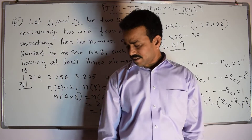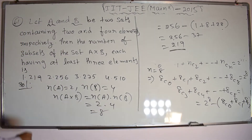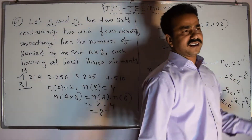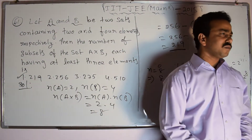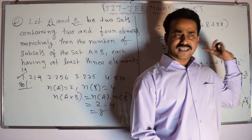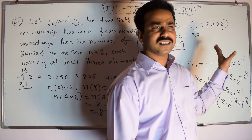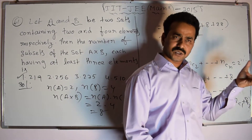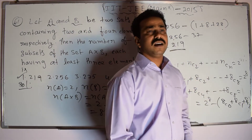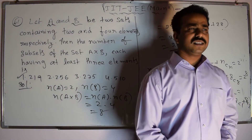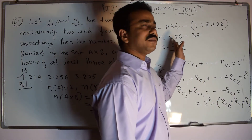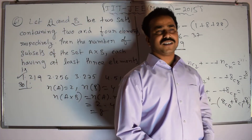The answer is 219. Comparing with available options, 219 is the correct answer. The key concepts used: first, the total number of subsets of a set (2 power N); second, combinations — choosing 3 elements from 8 using NCR; and third, the binomial coefficient formula NC0 + NC1 + ... + NCN = 2 power N, which we used as a shortcut. Finally, we got the result. Thanks for watching. All the best.